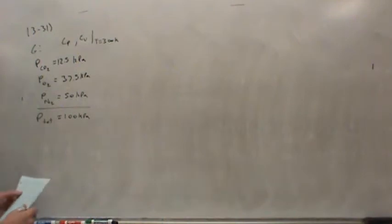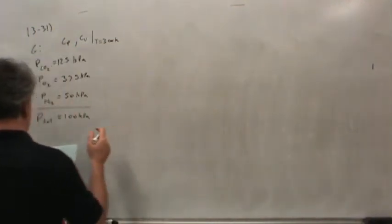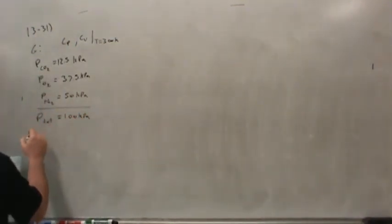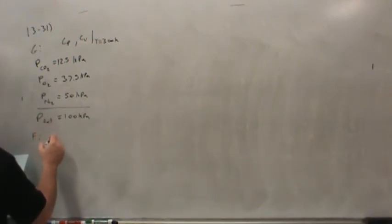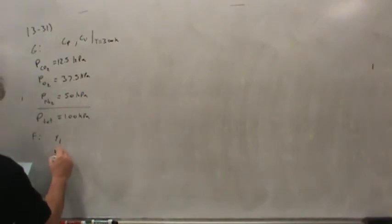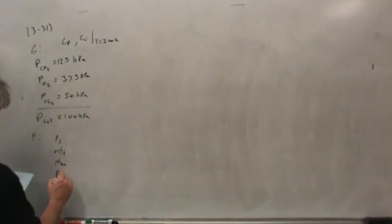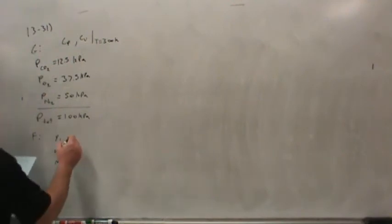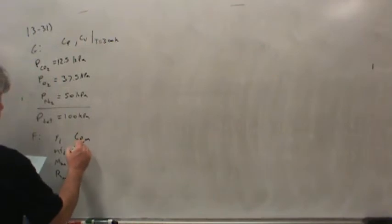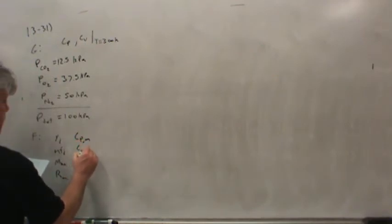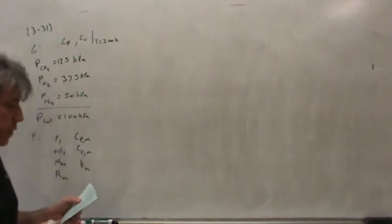To make this easier, I'm going to set up a table. Let me write down what we're supposed to find. The mole fraction is Y_i, the mass fraction is MF_i, the apparent molecular weight is M for the mixture, the apparent gas constant is R_m, and the heat capacities Cp and Cv for the mixture, as well as the ratio of heat capacities. So we've got seven different things to find.